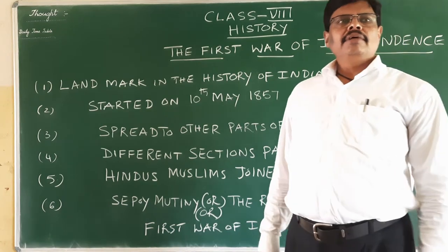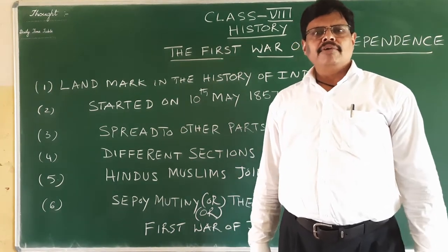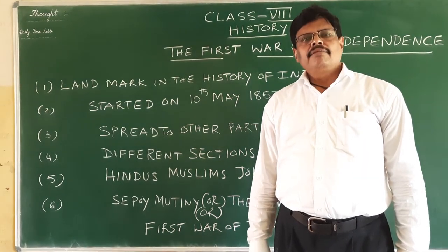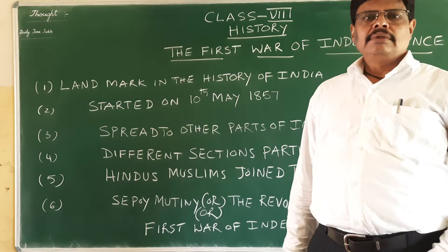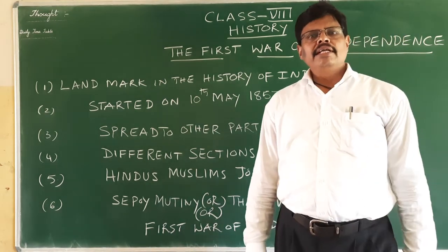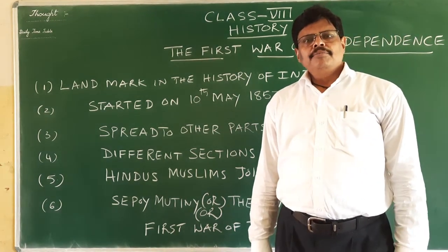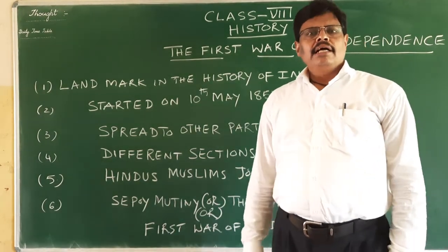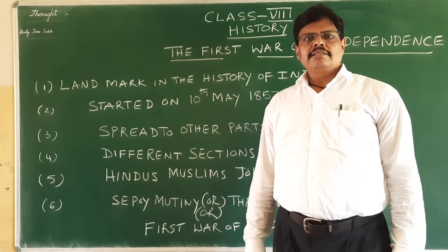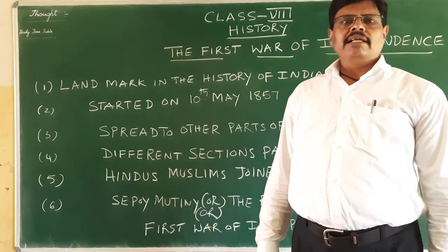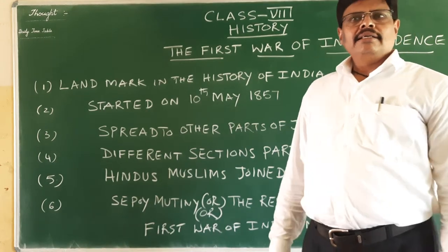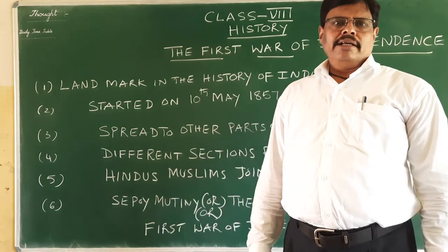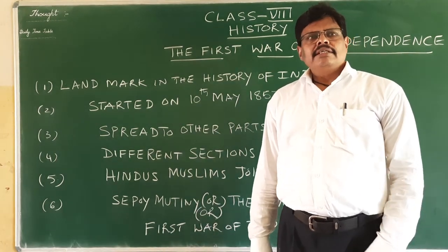In this chapter, we will discuss the revolt of 1857 in detail — what were the causes of the revolt, who were the important leaders who participated, how the British suppressed this revolt, and the reasons for the failure of the revolt of 1857.